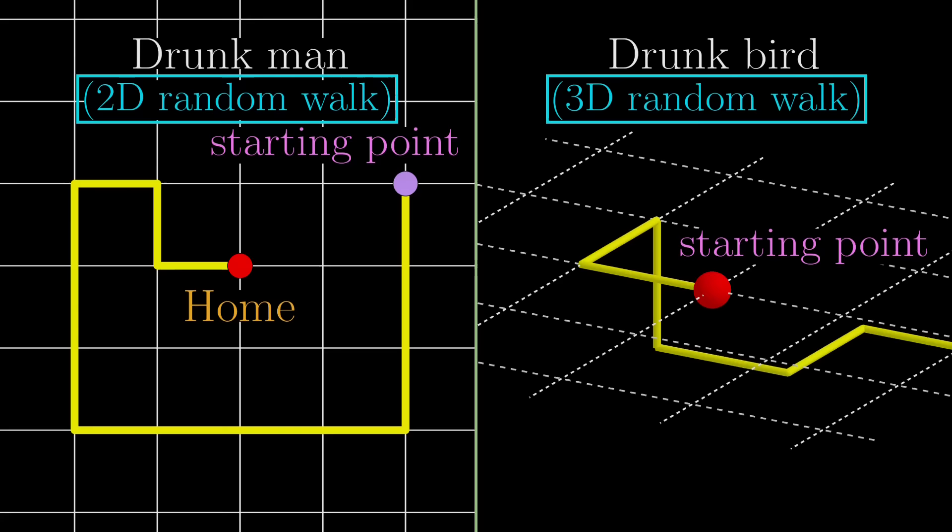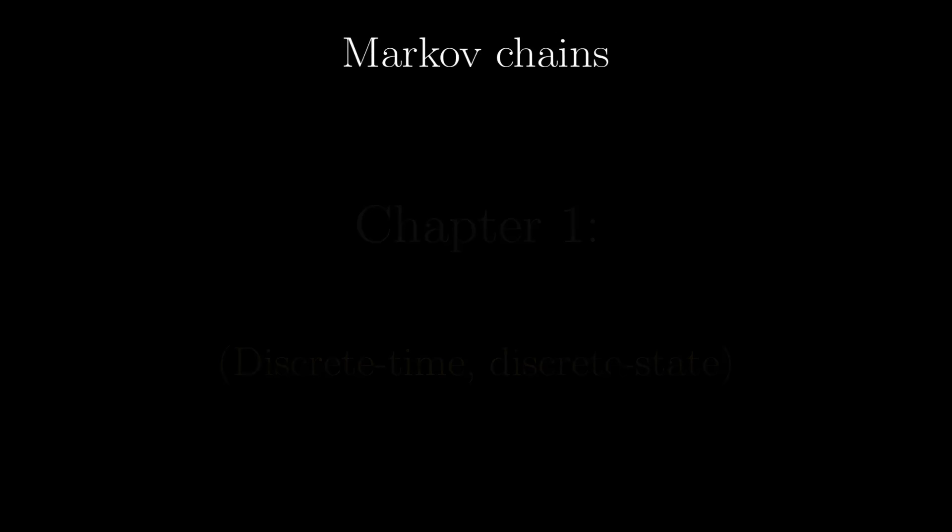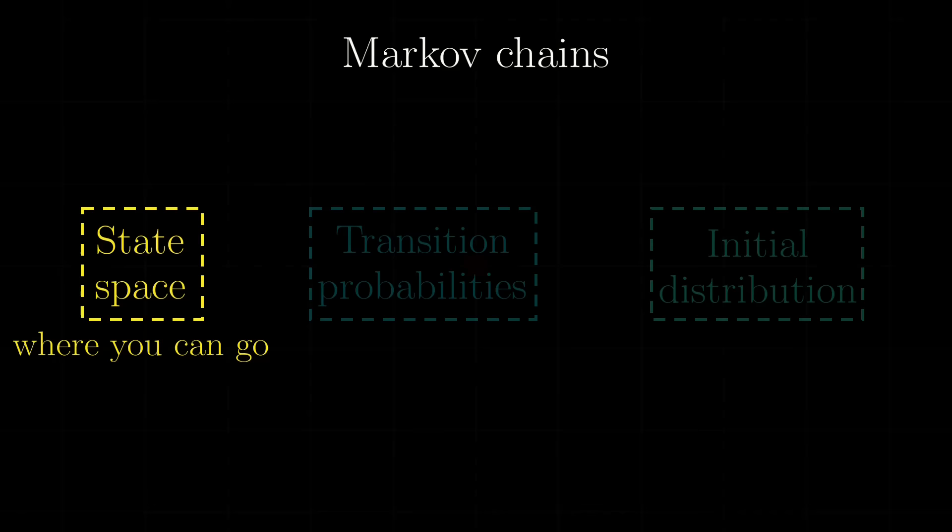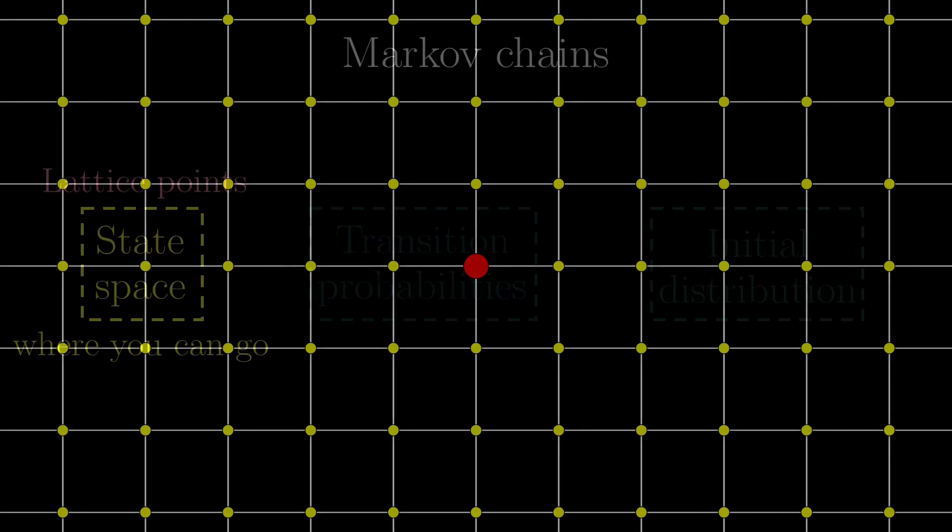A Markov chain consists of three things. The first is the state space, essentially meaning where you can go. In the case of random walks, for simplicity, the state space would be just those lattice points, so the drunk man or bird can only visit those lattice points.